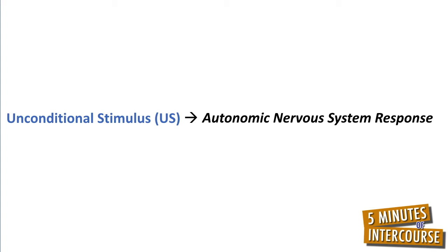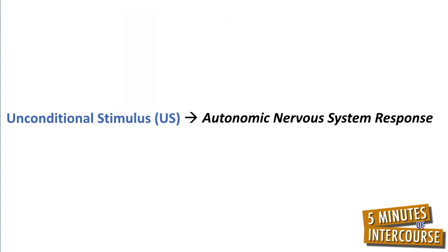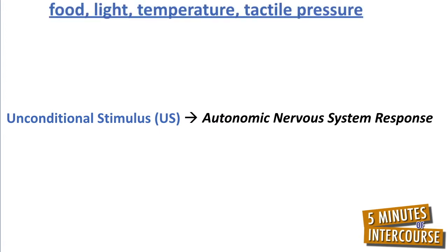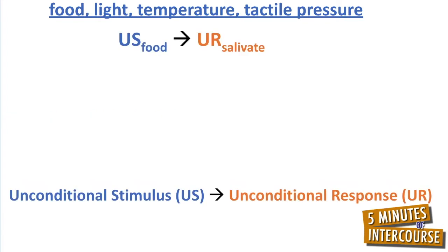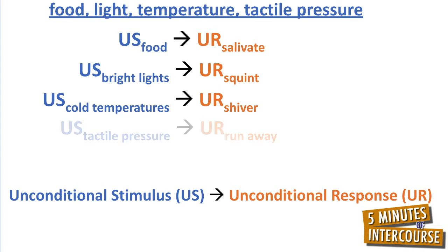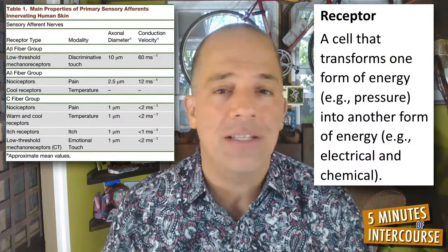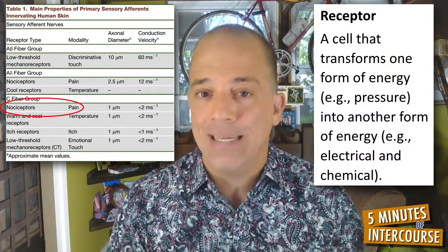By nature, an unconditional stimulus automatically causes an autonomic nervous system response and requires no prior exposure or learning. Food, light, temperature, and tactile pressure are a few examples of unconditional stimuli. Food automatically makes us salivate. Bright lights automatically make us squint. Cold temperatures automatically make us shiver. As for tactile pressure, it may automatically make us run away or fall in love. Our skin contains a variety of receptors. One of these types of receptors, called a nociceptor, detects pain.